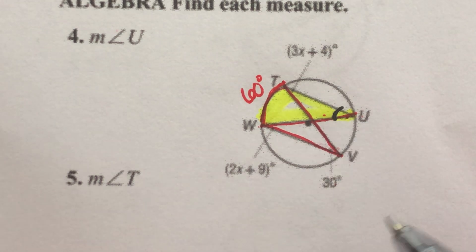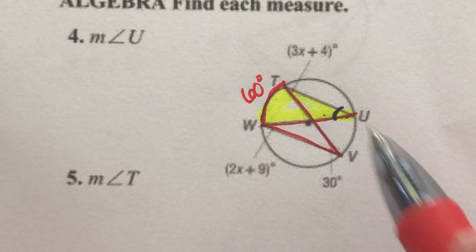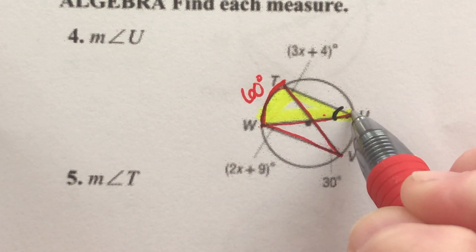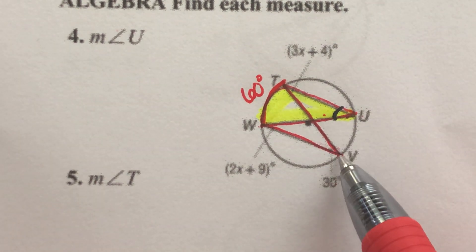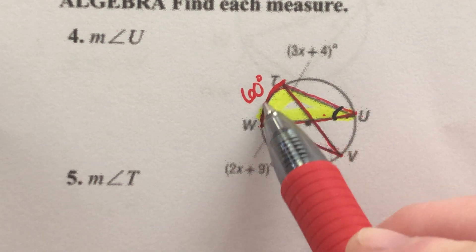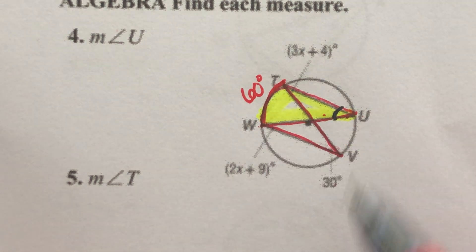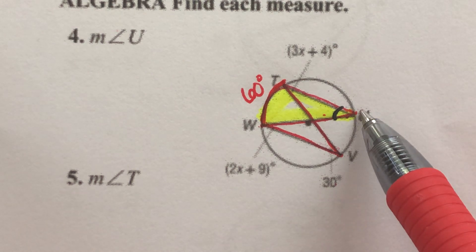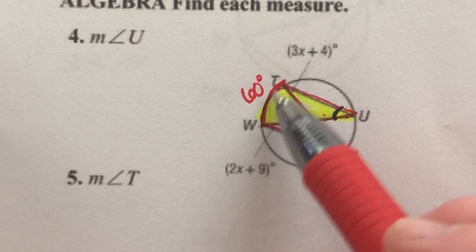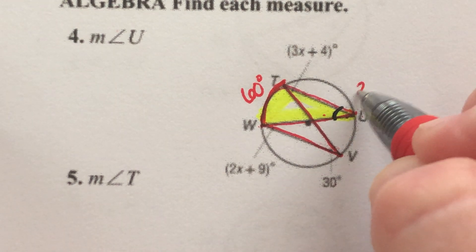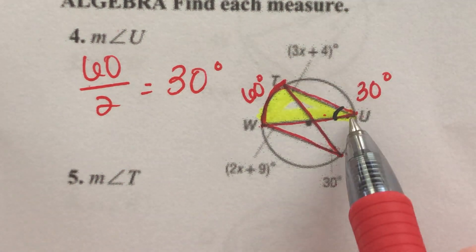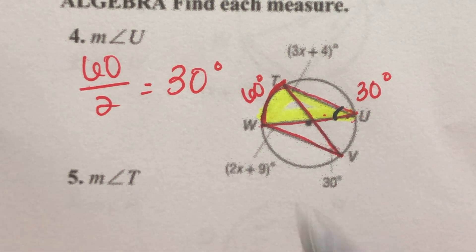Angle U is an inscribed angle that creates this same intercepted arc. So both angles V and U share the same intercepted arc, which means U and V have to be the same size. Angle U has to be half of this arc: 60 divided by 2 equals 30 degrees. The measure of angle U is 30 degrees.